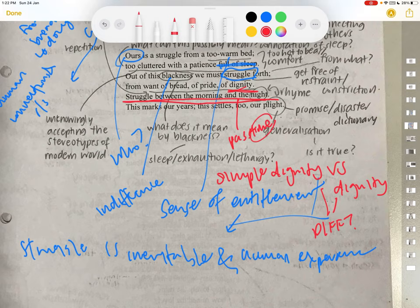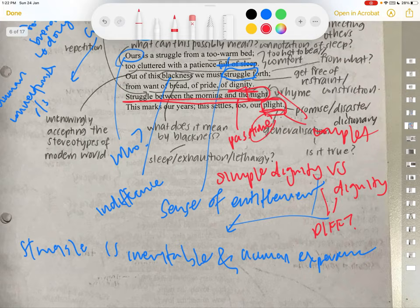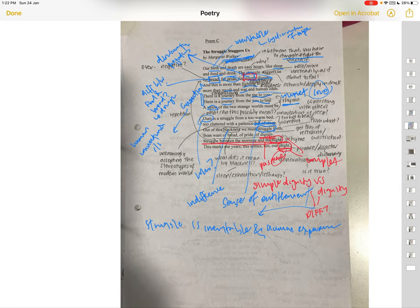This marks our years, this settles to our plight. So plight is actually a very, it's just like a bad thing. It's their fate. So it actually kind of have a premonition, foreboding kind of a tone to it. And you see here that there's another couplet. Is it just for a nice tone to it, or is there something deeper to the use of couplets for the last two stanzas? So that's something you can think about.